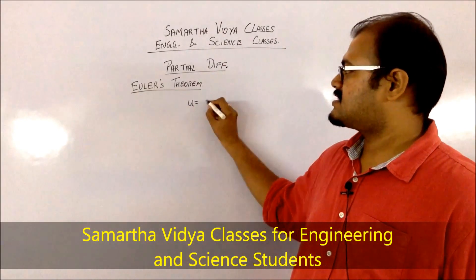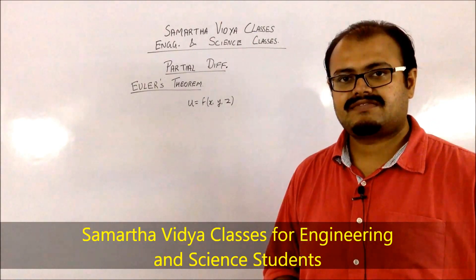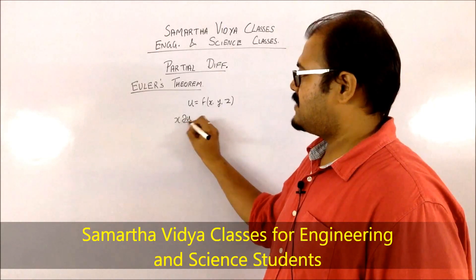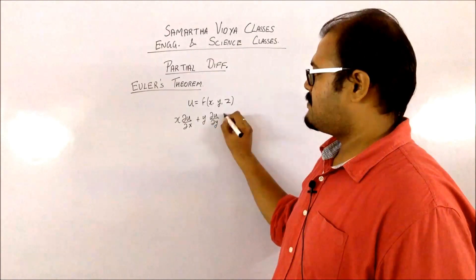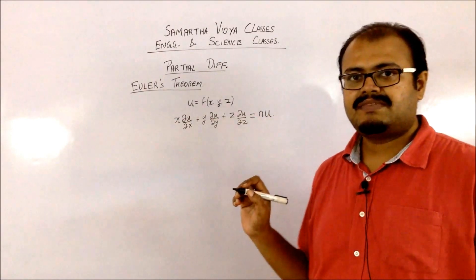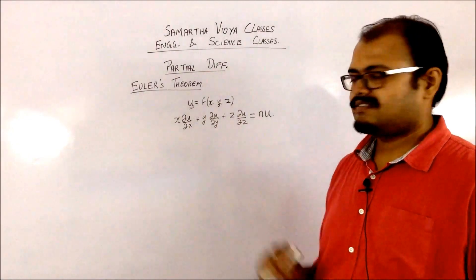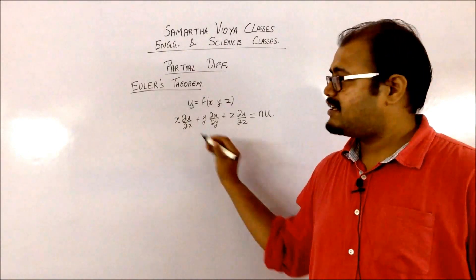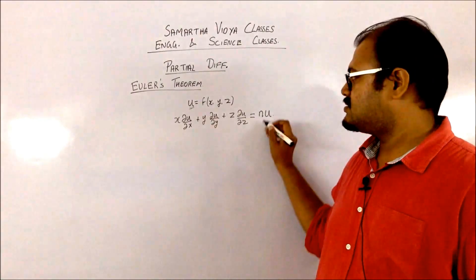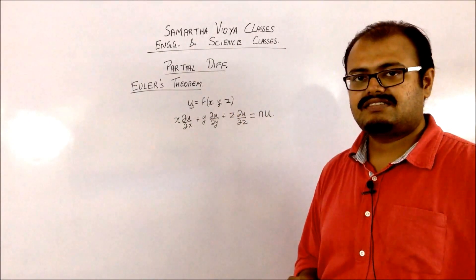This particular Euler's theorem can be extended to n number of variables. If u is a function of x, y, and z, and u is a homogeneous function of x, y, and z with degree n, then Euler's theorem gives x·(∂u/∂x) + y·(∂u/∂y) + z·(∂u/∂z) = n·u. The addition of all those derivative terms is equal to n·u, where n is the degree of the homogeneous function and u is the original function.